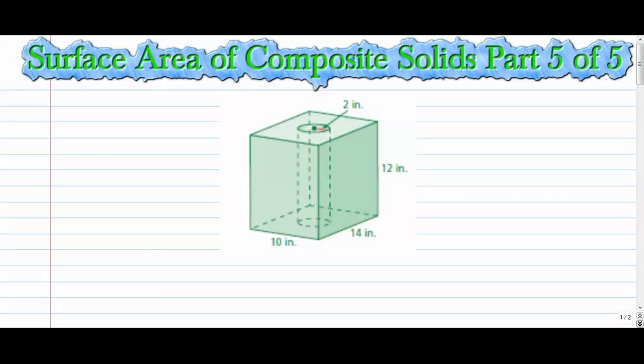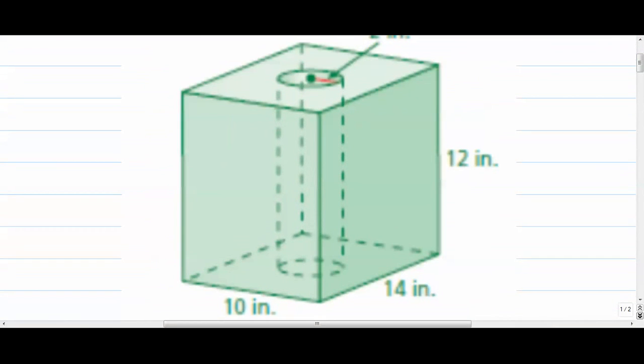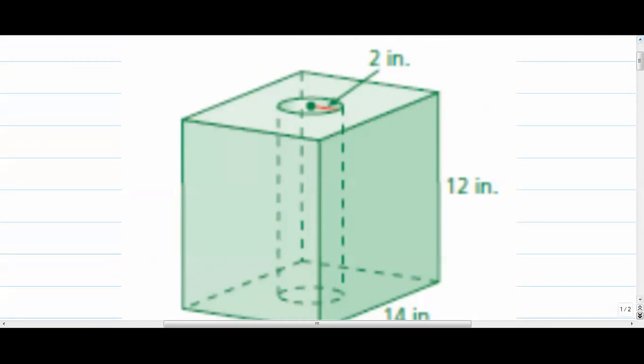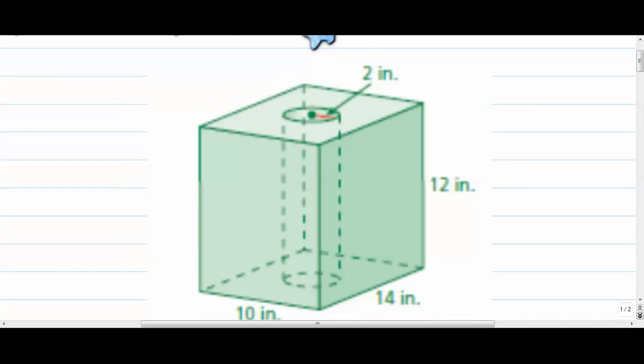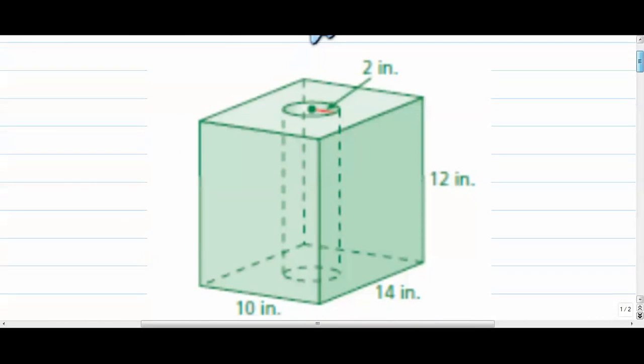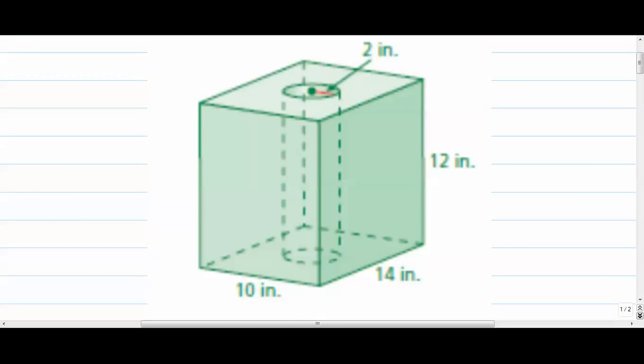So right here we're looking at what looks like some sort of rectangular prism and we have a cylinder removed from the center, and that's going to really play a big part into how we calculate this. As you can see, if we zoom in, there is a cylindrical core that is removed from here. So as we calculate surface area, we have to think about what to subtract and also what to add.